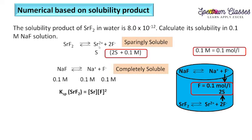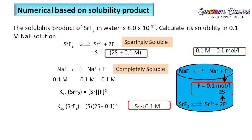Total fluoride concentration is 2s + 0.1 mol/L. So for strontium fluoride: Ksp = [Sr²⁺][F⁻]² = s × (2s + 0.1)². The 0.1 is not multiplied by 2 because it comes from NaF, not from SrF₂. Since s is very small compared to 0.1, we discard 2s, giving Ksp ≈ s × (0.1)². From this we can calculate solubility s for strontium fluoride.